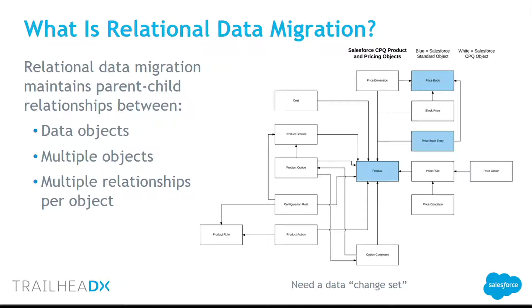What exactly do we mean by relational data migration? We're not just talking about moving accounts and contacts over. We're talking about moving a set of data so that you can do a thorough test. Most Salesforce applications have a complex interrelated set of objects. You can see here in this schema — this is just one part of the CPQ schema, just the pricing part. If you were to move this with a data loader, it would be very, very time consuming. Notice all the interrelationships — there are circular relationships and master details. It's really complicated.